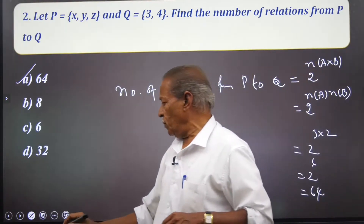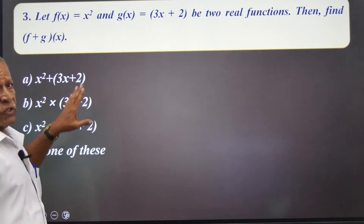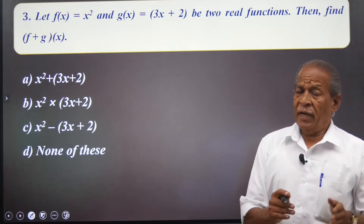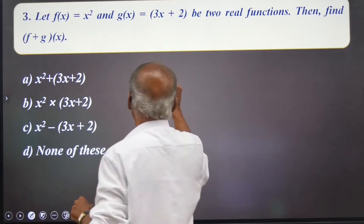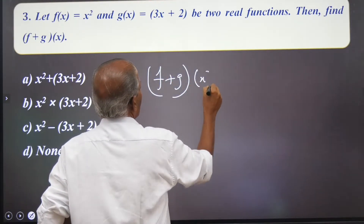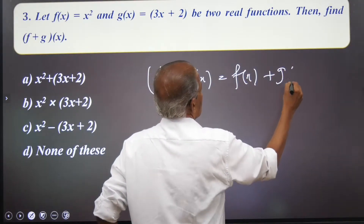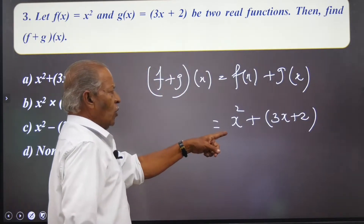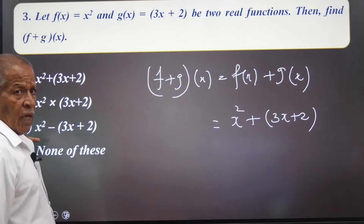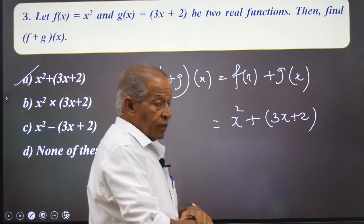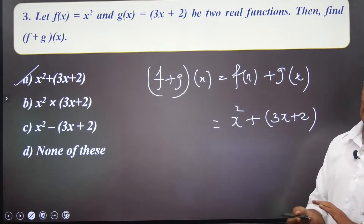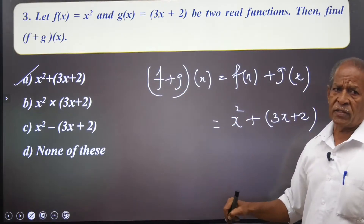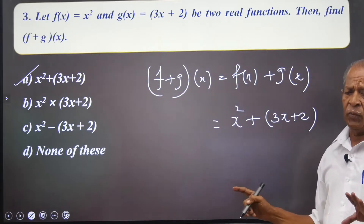For the third problem, let f(x) = x² and g(x) = 3x + 2 be two real functions. Find (f + g)(x). The formula is (f + g)(x) = f(x) + g(x) = x² + 3x + 2. Among the four options, the first one is the correct answer. Similarly, you can find f minus g, f times g, and f divided by g using the same approach.